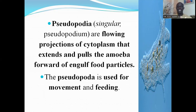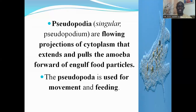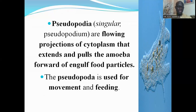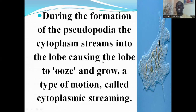The pseudopodia are flowing projections of cytoplasm that extend and pull the amoeba forward to engulf food particles. When the cytoplasm streams, it pushes part of the membrane forward, causing it to protrude, and then the amoeba flows into it; this is also used to engulf food particles. The pseudopodia therefore serve two functions: movement and feeding.